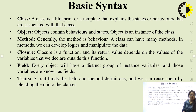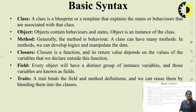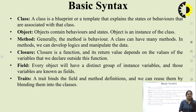First is class. We already know in Java, a class is a blueprint or template that explains the state or behaviors associated with the class. Next is object. Object contains behaviors and state, and is an instance of the class. Next is method. Generally, the method is behavior. A class can have many methods. In methods, we can develop logics and manipulate data.